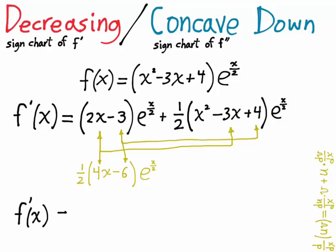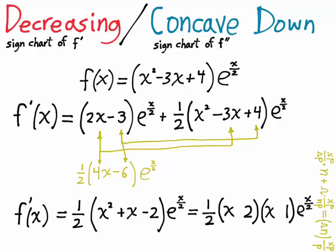And the simplified form becomes 1 half of x squared plus x minus 2 times e to the x over 2. This polynomial is factorable, which is what makes the sign chart easy to make. And how do you factor x squared plus x minus 2? Well, it's going to be x with a 2 and x with a 1. We just have to figure out where the plus and minus go. So if you notice the middle term is positive 1x, then you realize that it has to be x plus 2 times x minus 1. Now I have the factored form for f prime.